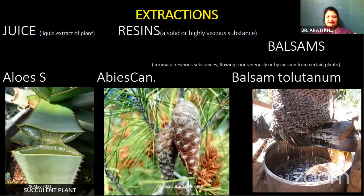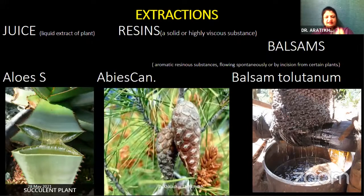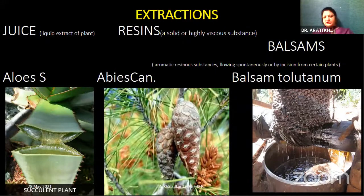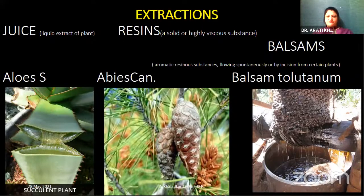Then we have extracts in the form of juice. Juices are the liquid extracts of plants. We have resins as well — a viscous solid substance. Examples: Abies canadensis juice and Aloes socotrina. We have balsams — basically aromatic resinous substances flowing spontaneously by any type of incision upon the plant. You can see in the illustration that they flow very spontaneously. This is Balsam tolutanum.